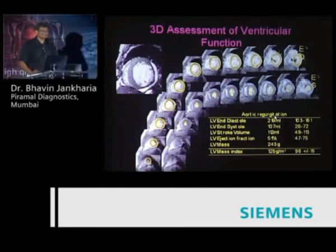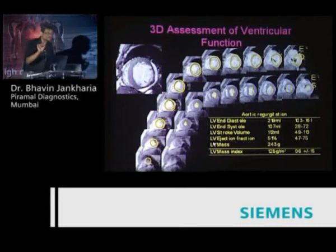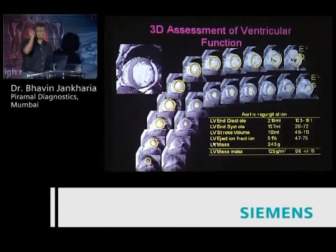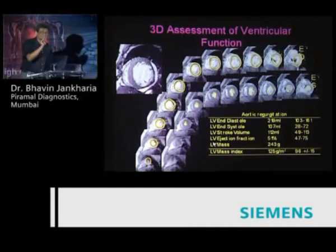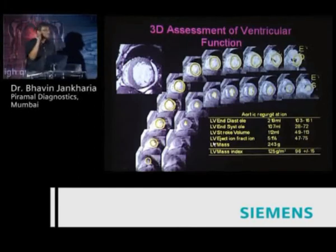Measuring ejection fraction is a repetitive task — you love it in the first 10 patients and then it becomes drudgery. You draw contours along the endocardium and epicardium from base to apex, using Argus function. Remember, CMR is the gold standard for ejection fraction. If the echo report is discordant, do not manipulate your EF to match the echo EF, because echo EF is always eyeballed. MR is more accurate, so have the confidence to stand by your MR measurement.